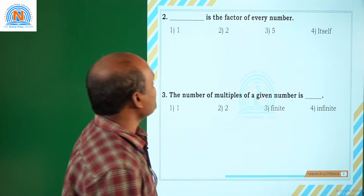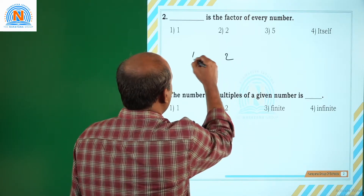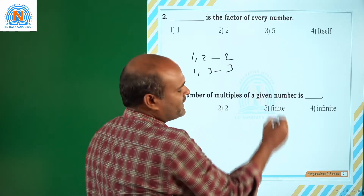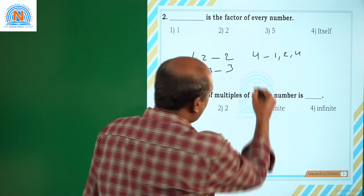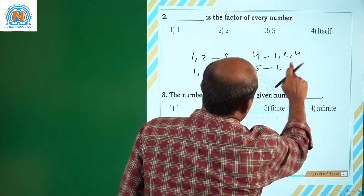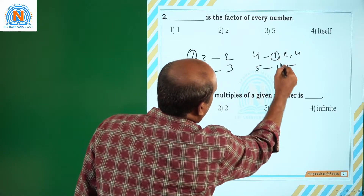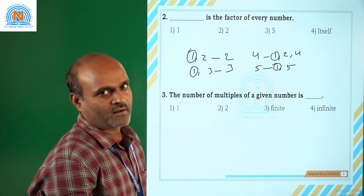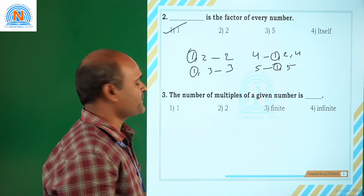Coming to the next question: dash is the factor of every number. If you take any number — suppose 2, its factors are 1 and 2. Suppose 3, factors are 1 and 3. Suppose 4, factors are 1, 2, and 4. Suppose 5, factors are 1 and 5. In all numbers, the common factor is 1. So 1 is the factor of every number. The correct answer is option 1.